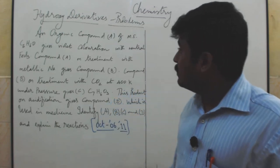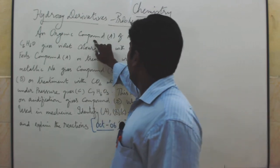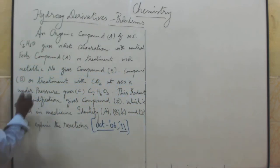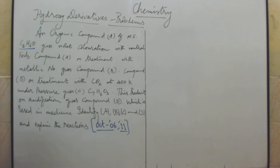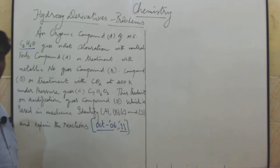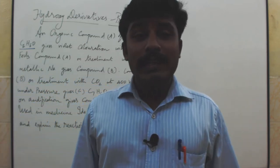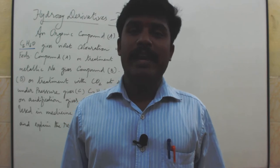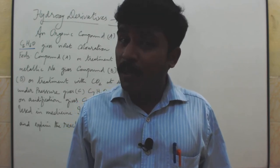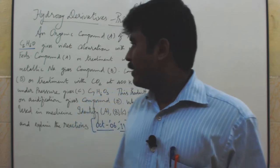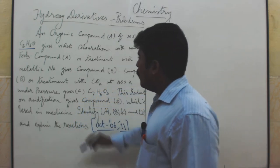The next problem involves an organic compound A with molecular formula C6H6O. It gives violet coloration with neutral ferric chloride. What is compound A?